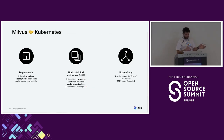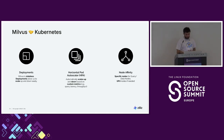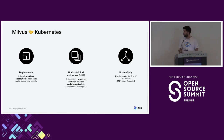Everything in Milvus runs as a deployment in Kubernetes terms, meaning you can scale everything up and down very easily. Usually you run an HPA on top, based on custom metrics we push to Prometheus. So if your query latency becomes too high, you can scale that up automatically.